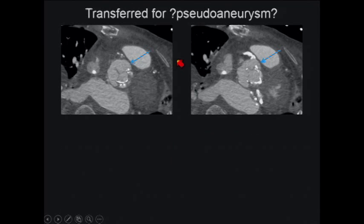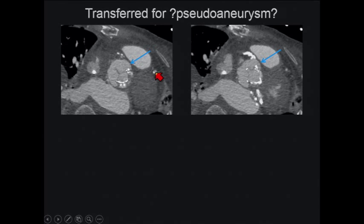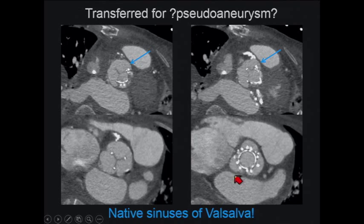Here's a pitfall: a patient transferred to our department with question of a pseudoaneurysm because they saw an asymmetric bulge near the aortic root on axial images. This emphasizes always doing MPRs and looking at the images on a 3D workstation. When you reconstruct, you see the valve is nicely seated — these are the patient's native sinuses of Valsalva that were dilated. This is not a pseudoaneurysm. This was just a fakeout.